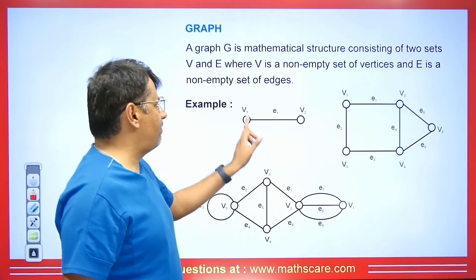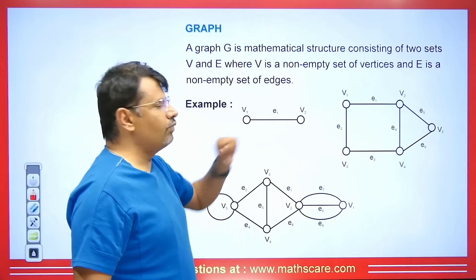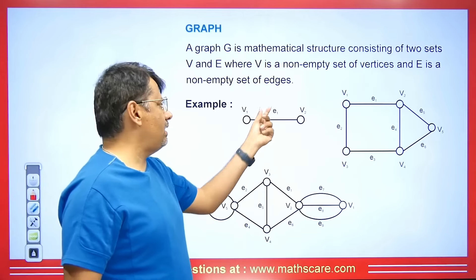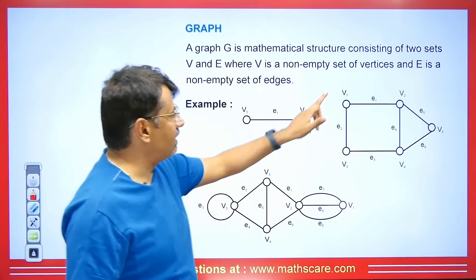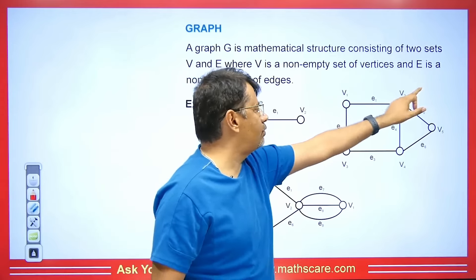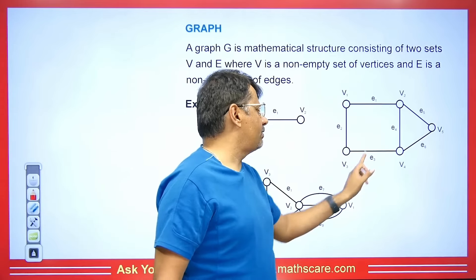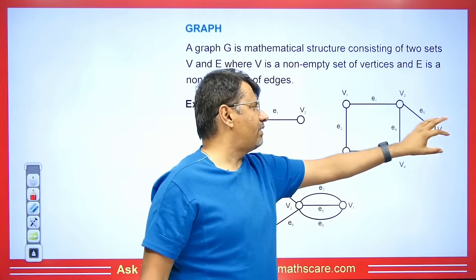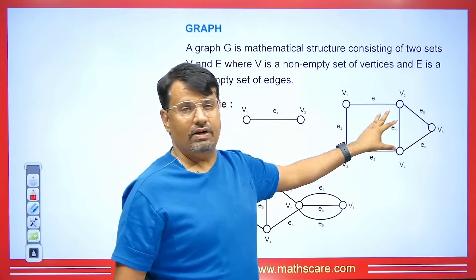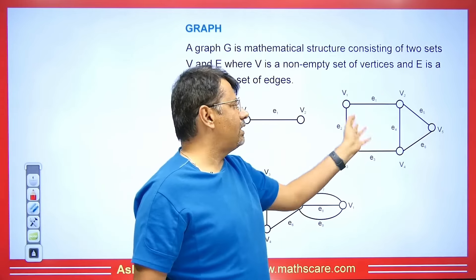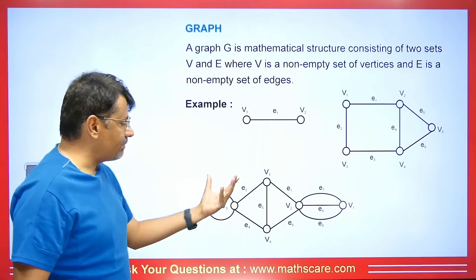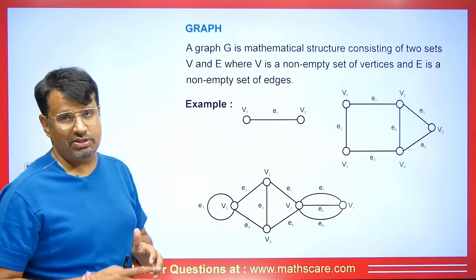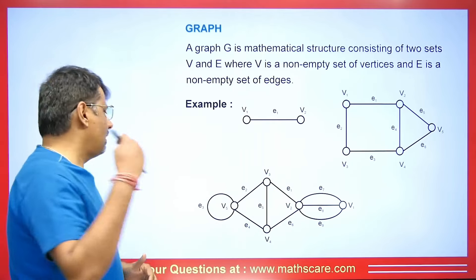Here we have a graph with V1, V2, V3, V4, V5 as the vertices. And E1, E2, E3, E4, E5, E6 are the edges. So we have the set of vertices and the set of edges making up this graph.